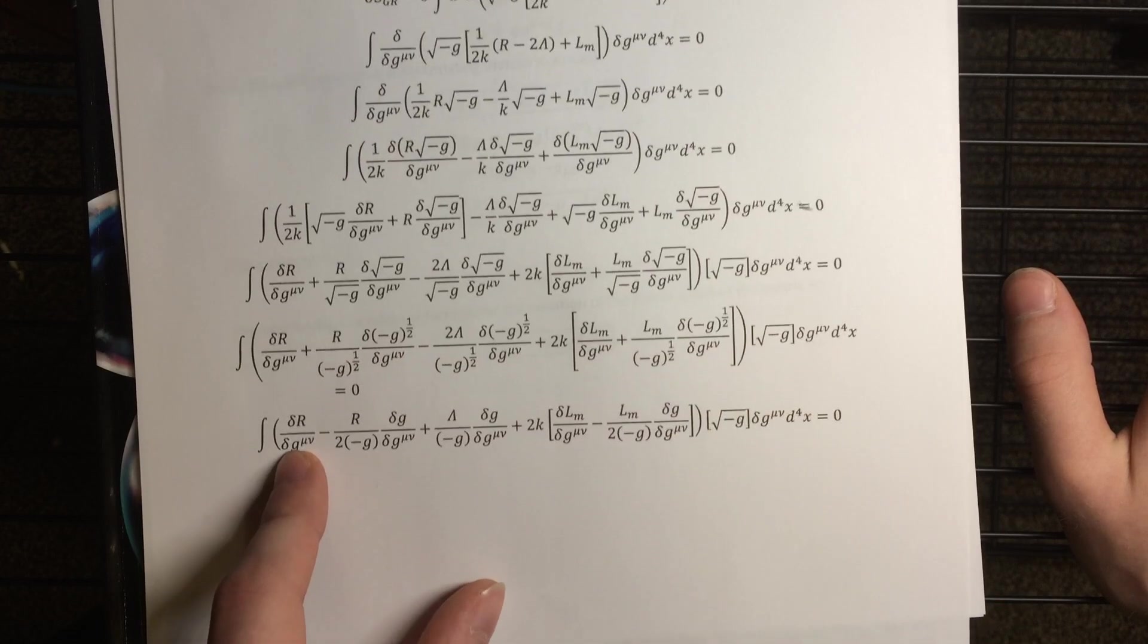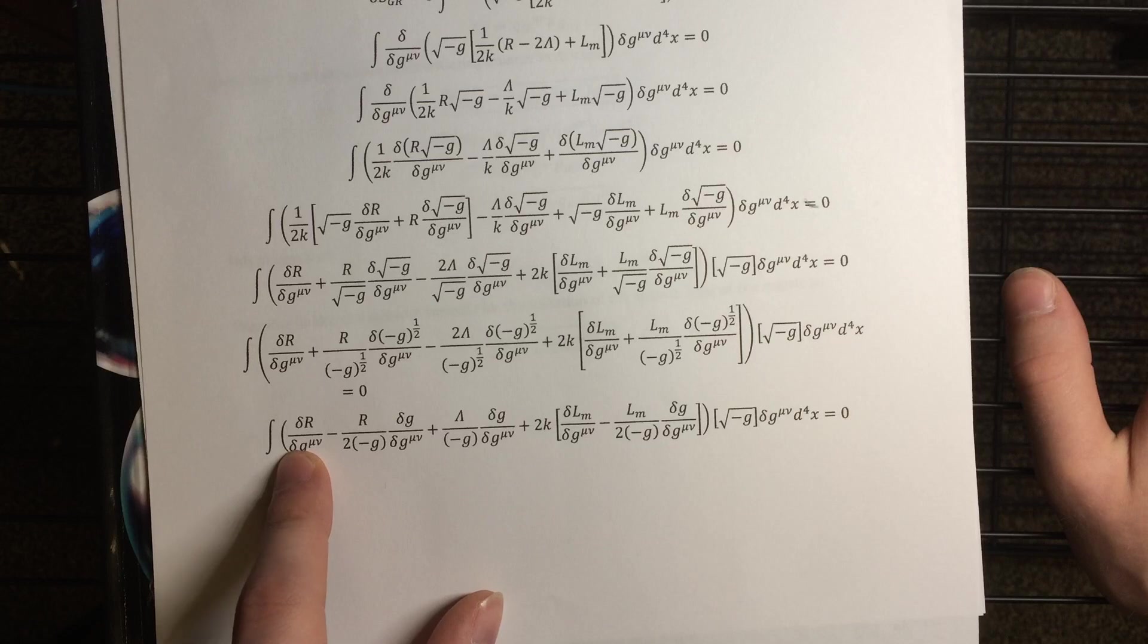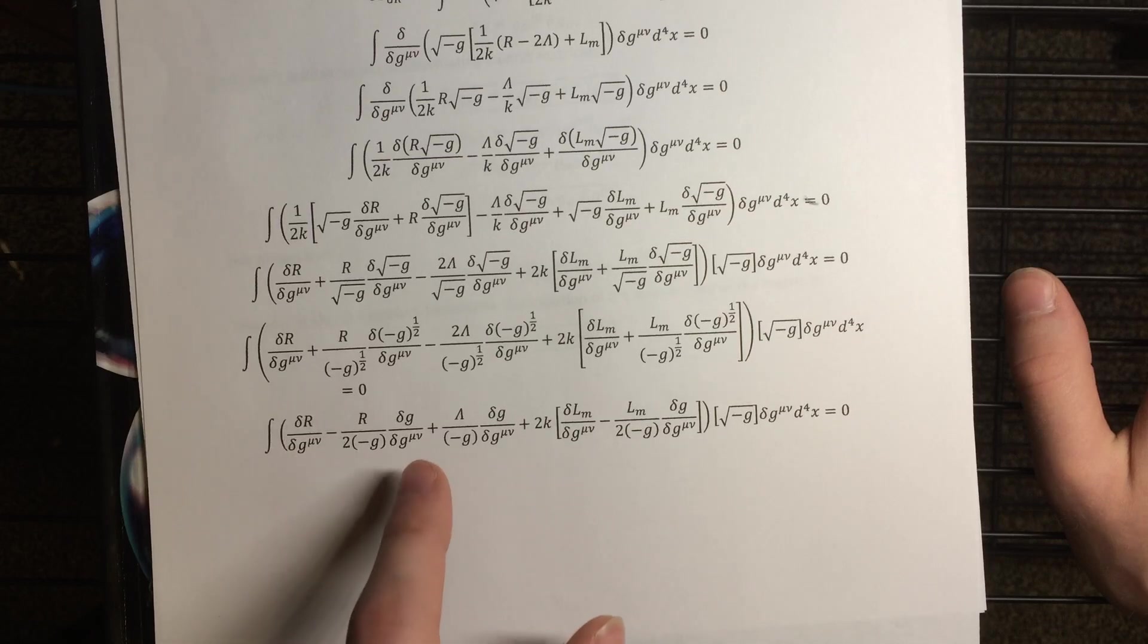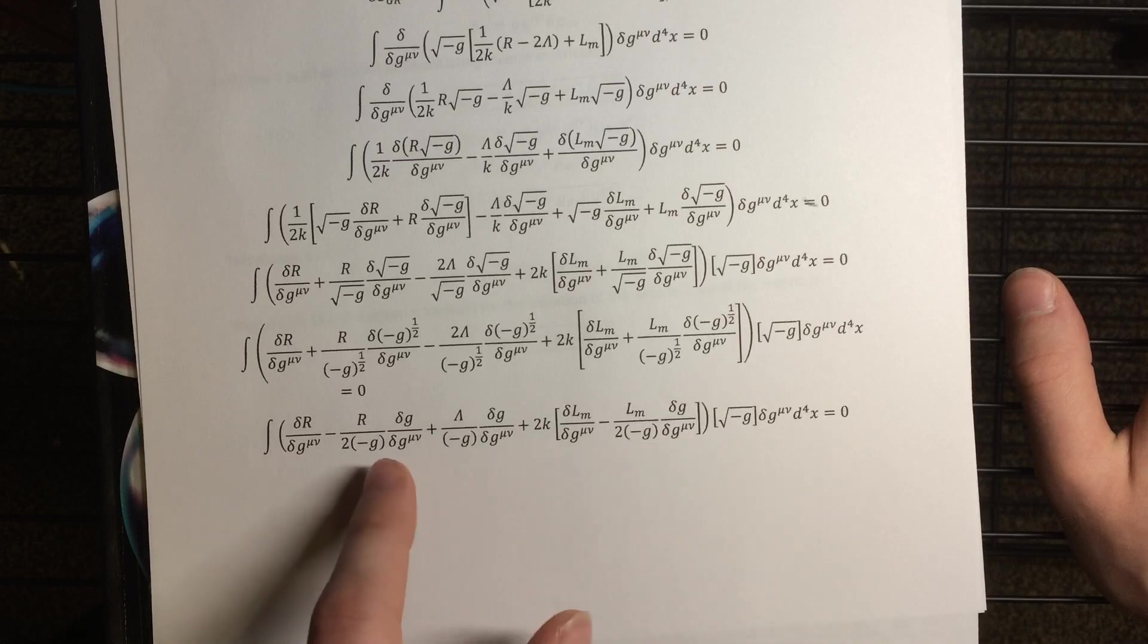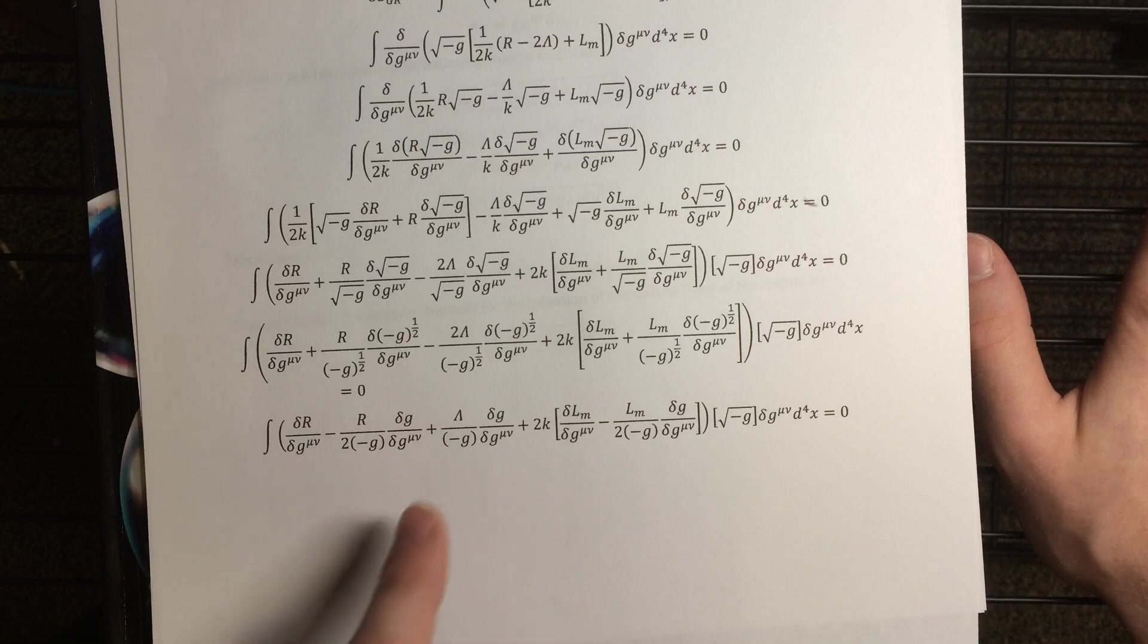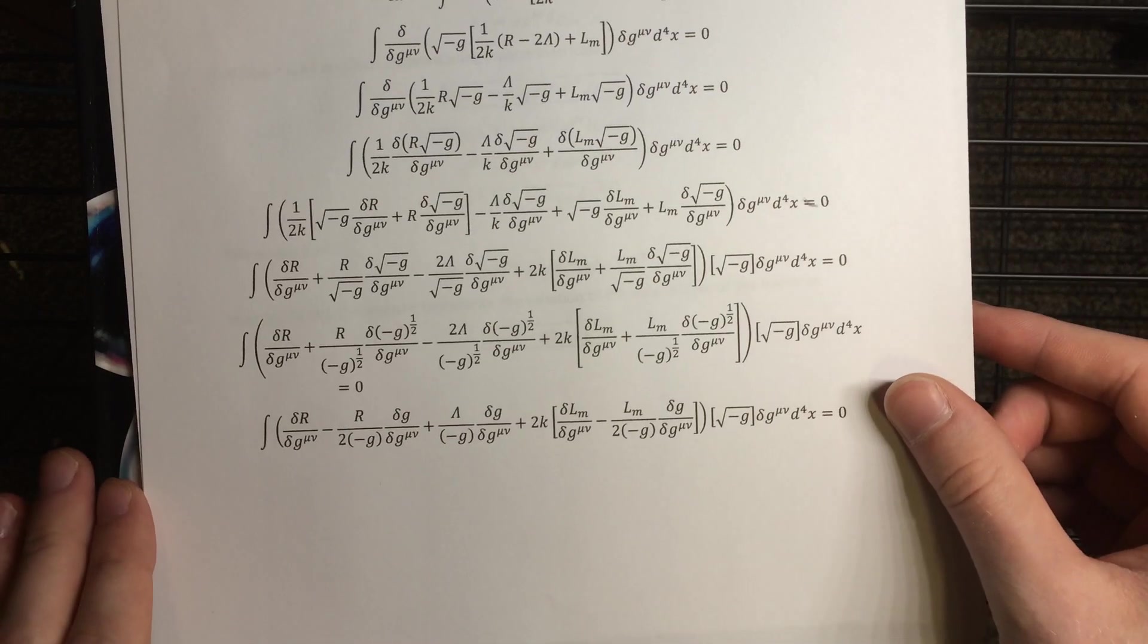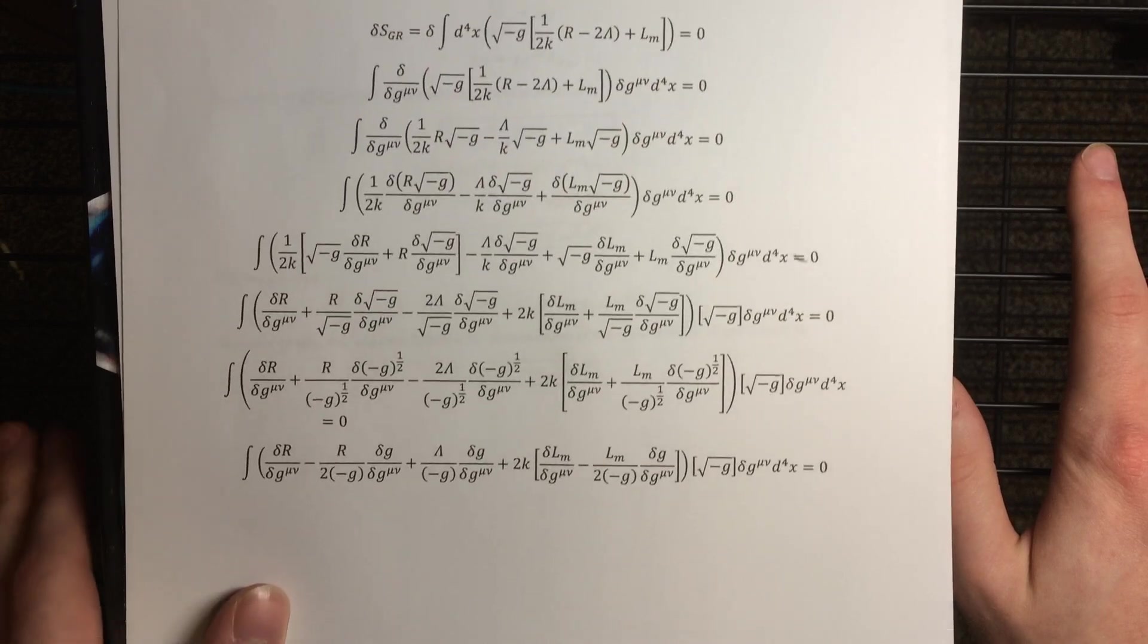When you do that, you get the action written in terms of only two variations, the variation of the scalar curvature with respect to the metric, and then also the determinant of the covariant metric with respect to the contravariant metric. And this chain rule application gave us some minus signs and some factors of 2 in the denominator. And all of this so far was pretty straightforward algebra.